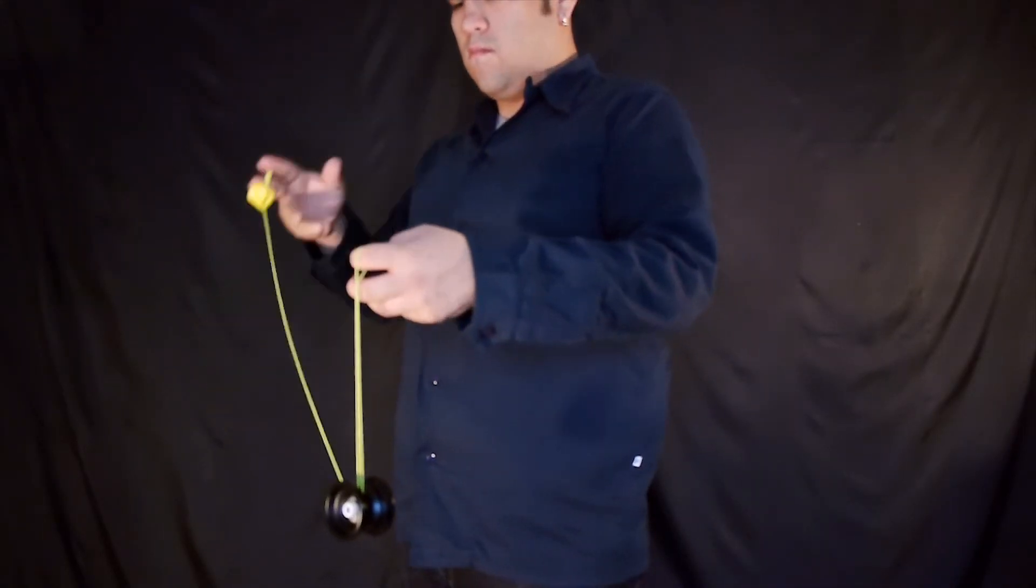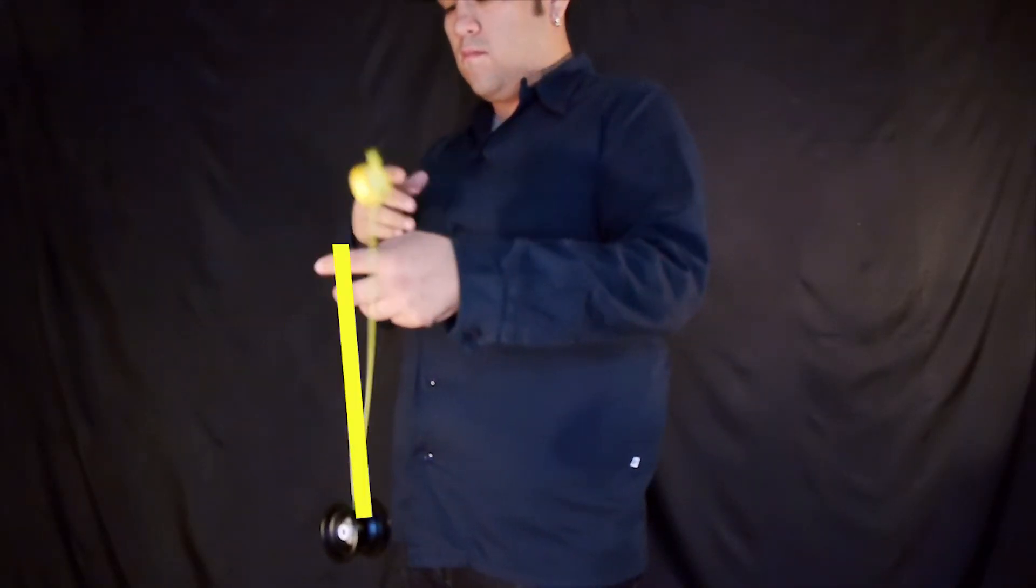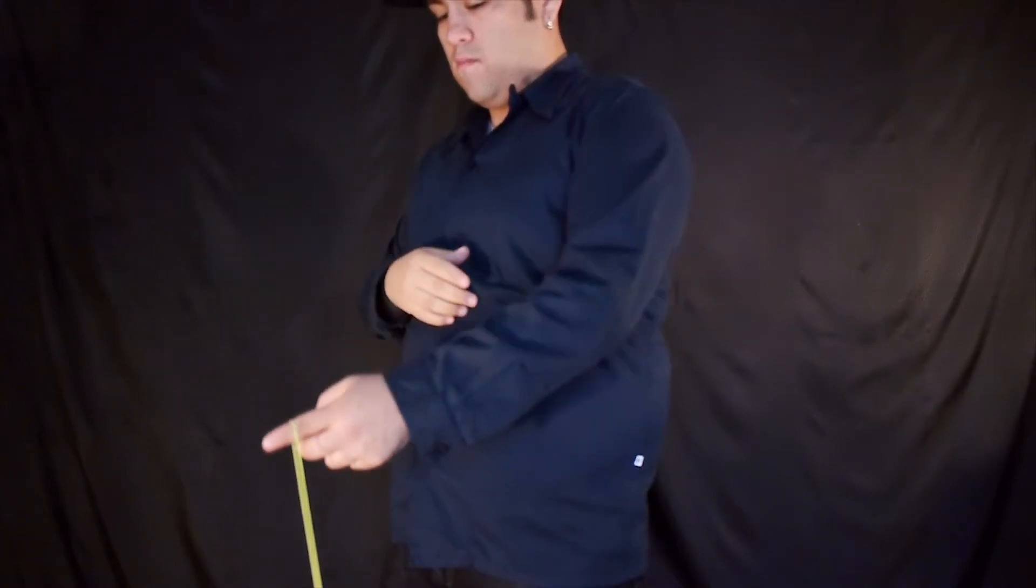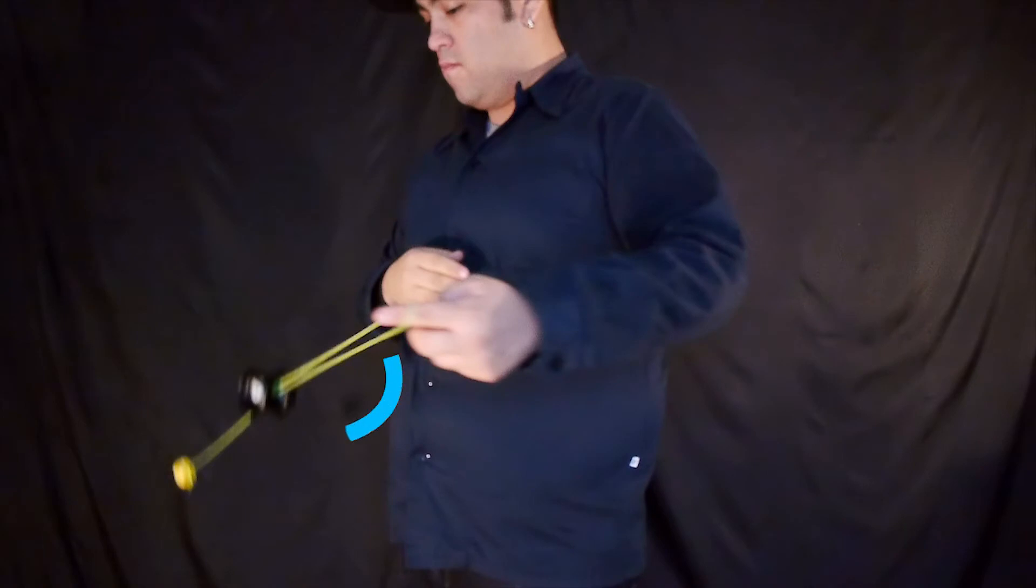Now you're going to toss the counterweight over in front of the finger loop, and as the counterweight comes around, you're going to lower your hand a little bit and then bring it right back up. Now that movement should give the suicide loop enough motion to come back all the way around.